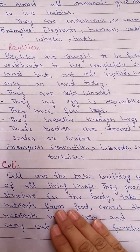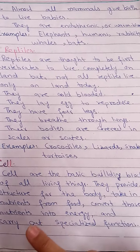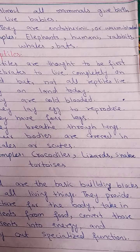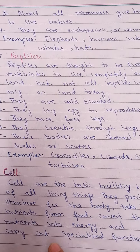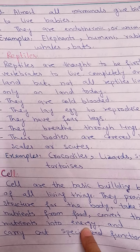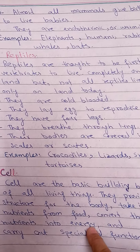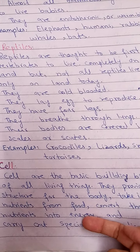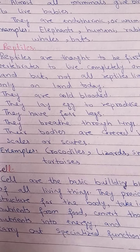What is the cell actually? The cell is the basic building block of all living things. They provide the structure for the body, take in nutrients from food, and convert those nutrients into energy. Cells also carry out specialized functions and utilize energy through different kinds of cellular activities.